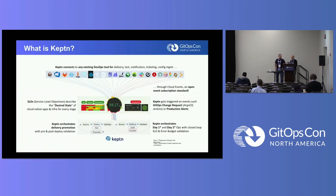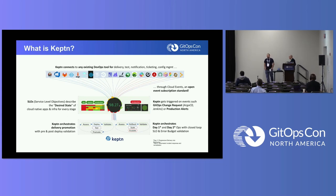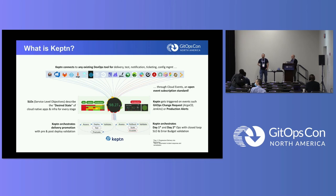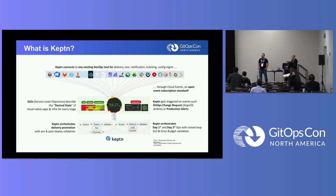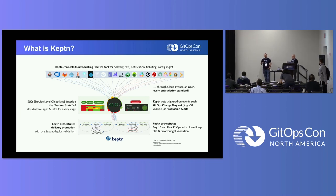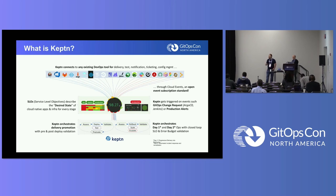As we will talk a bit about Keptn today, I just wanted to describe what Keptn is. Keptn is a tool which should help you keeping your deployment stable and keeping your application stable, and it does this by putting data or service level objectives in the middle of your process and helps you integrating different tools.